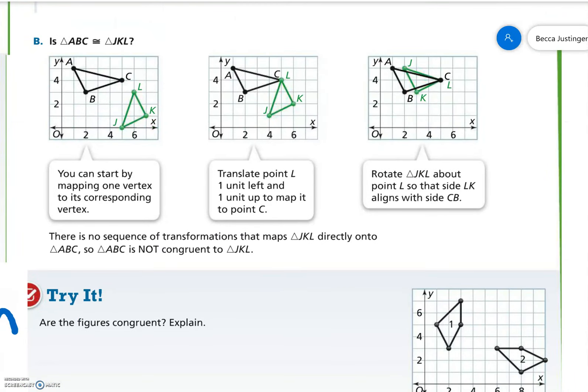Part B, is ABC congruent to JKL? So again, A would be on J, K would be with B, and C would be with L. Reads in order. So you can already see that there's going to have to be some sort of rotation. So you can start by mapping one vertex to its corresponding vertex. So they're going to translate first. They're going to map C onto L because they should be touching each other. Then, rotating JKL about point L so that side LK aligns with CB, uh-oh, does it line up? No, they cannot be mapped on top of one another using a sequence of transformations, so they are not congruent.